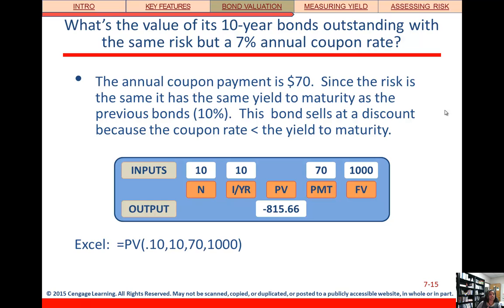The reverse is also true. If interest rates go up, then bond prices go down. Here interest rates started at 7%, went up to 10%, and now the bond price has gone down below face value, so the bond is selling at a discount. We change the payment to $70, compute present value and we get negative $815.66.